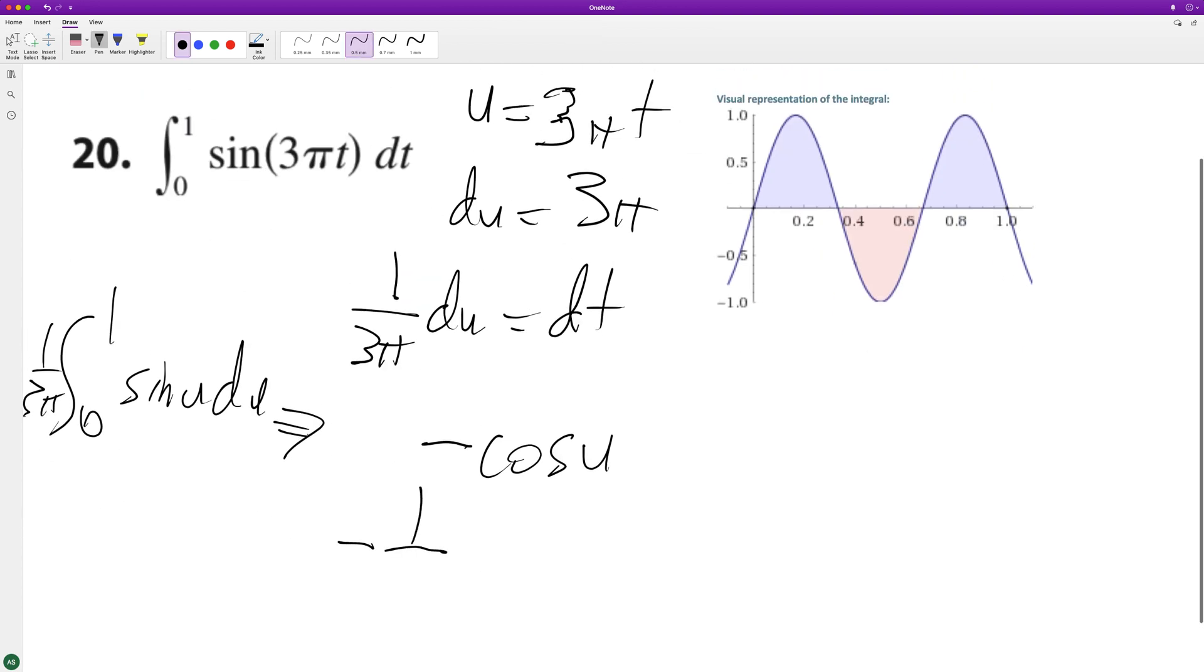And then just substitute everything back in. So it's negative 1 over 3 pi cosine of 3 pi t. Okay, so we're going from 0 to 1.